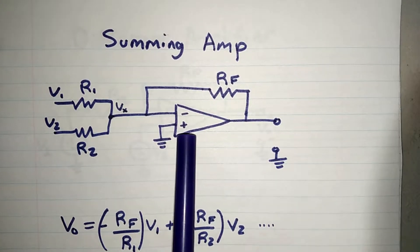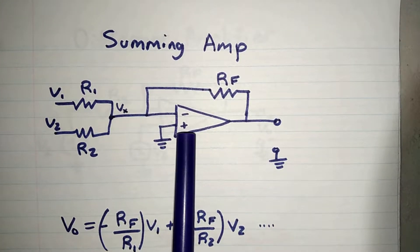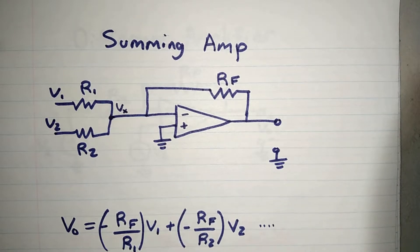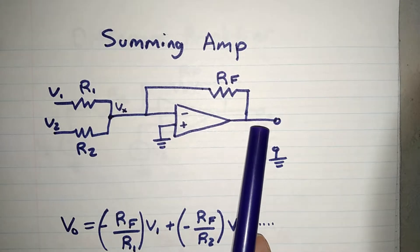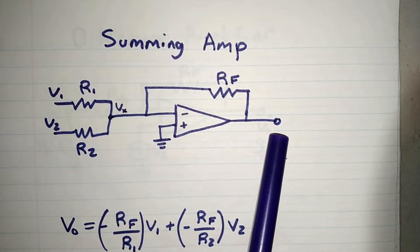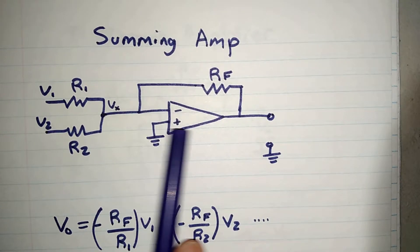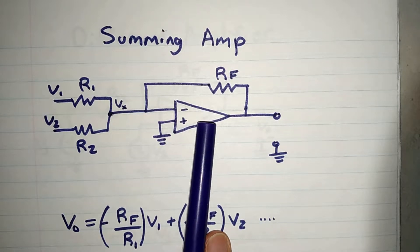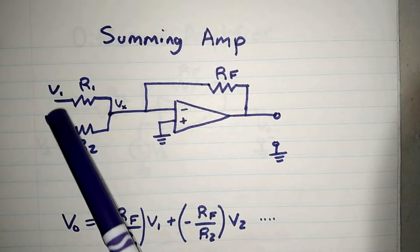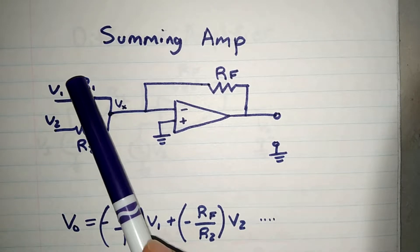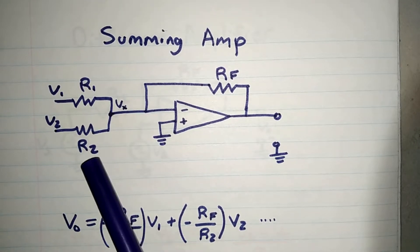An op-amp by definition is a differential amplifier. It takes a difference between two terminals and outputs voltage amplified. But we can play with this op-amp and create a circuit such that having a number of voltage inputs, it doesn't necessarily have to be only two. It can have infinitely many.